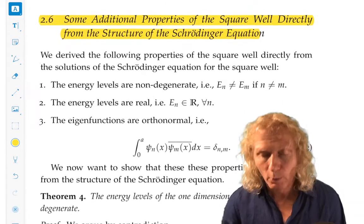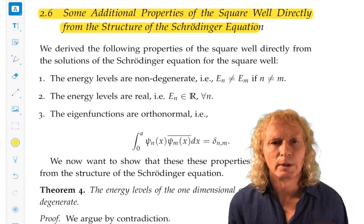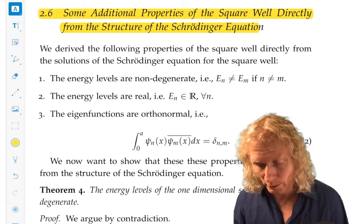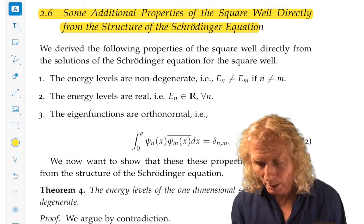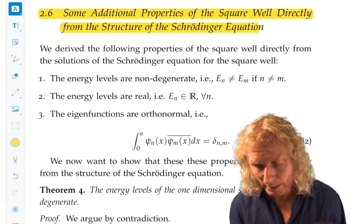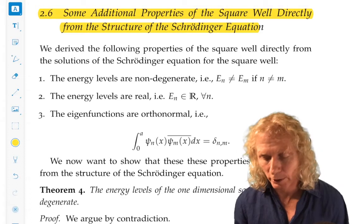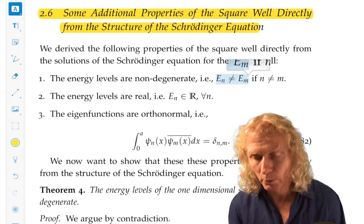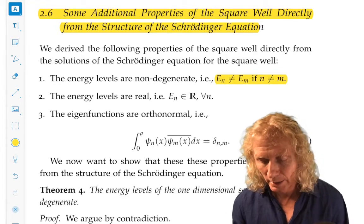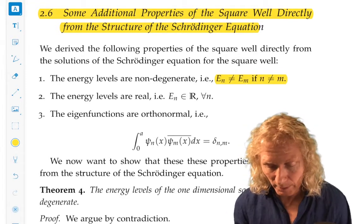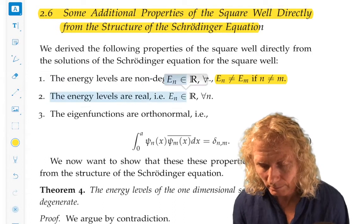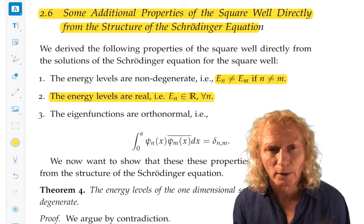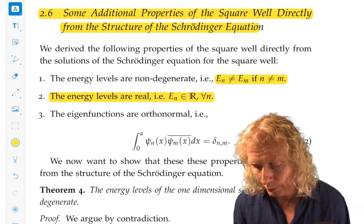So when we solved the time-independent Schrödinger equation for the square well, we showed directly that the energy levels were non-degenerate, that is, all the eigenvalues were distinct. That the energy levels, or the eigenvalues, were all real, and that the eigenfunctions were orthonormal.